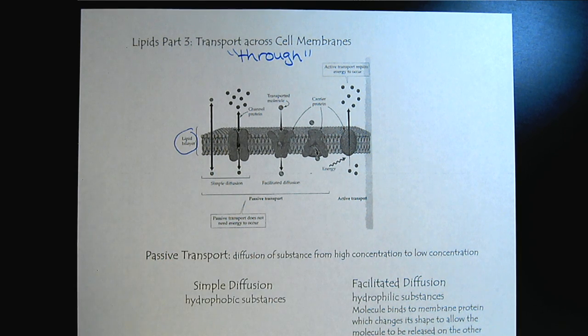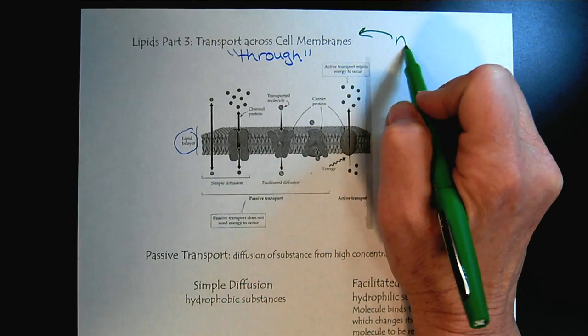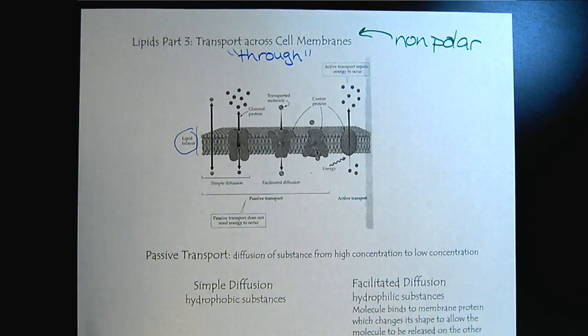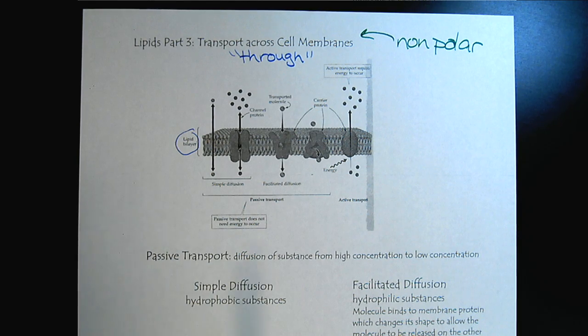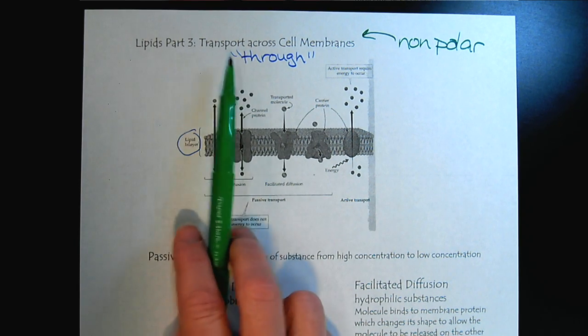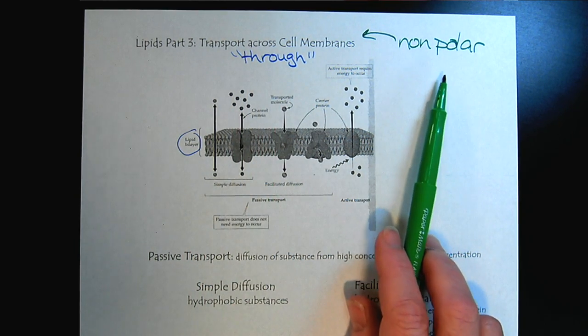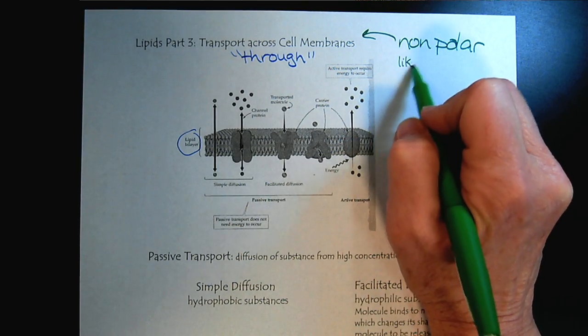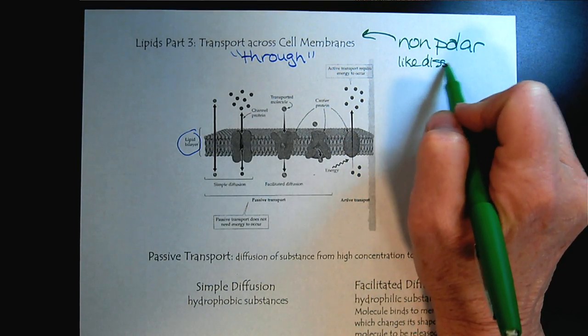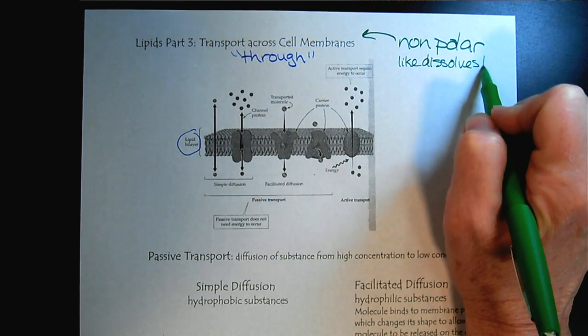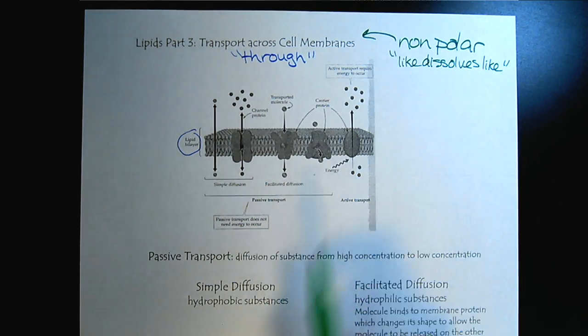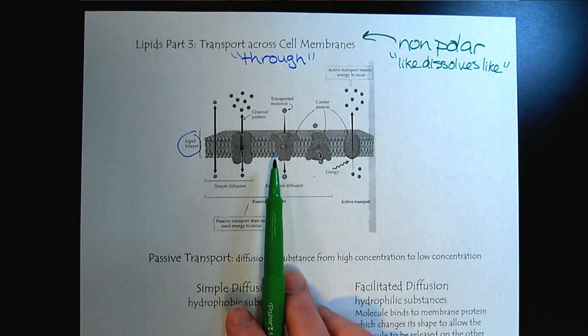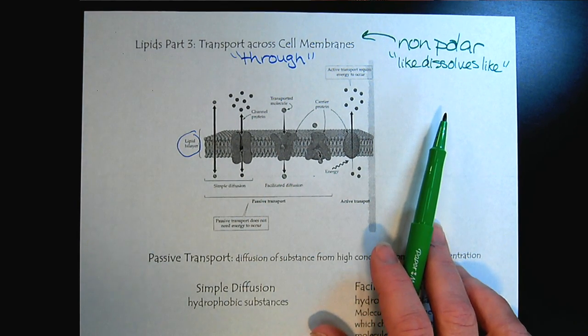So when we think about cell membranes, we think nonpolar. Whenever we want to predict how a substance will transport through the membrane, we think about what we know about intermolecular forces, and like dissolves like. So substances that are nonpolar are going to travel easily through the cell membrane, and substances that are polar won't.